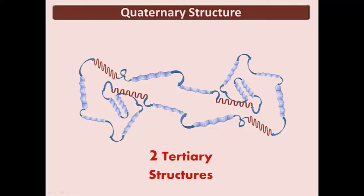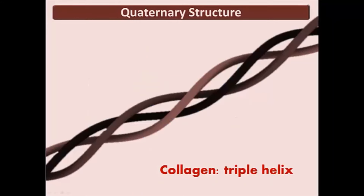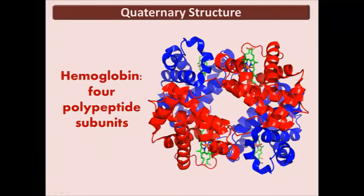95% of proteins have quaternary structure. The same bonding in tertiary structure is the bonding of quaternary structure. Two examples of quaternary structure are collagen and hemoglobin. Collagen has three helix polypeptides that intertwine forming a superhelix. Hemoglobin is made of four polypeptide subunits.